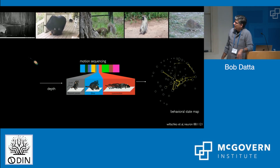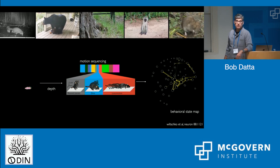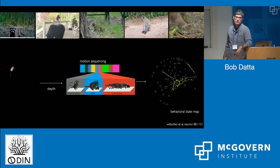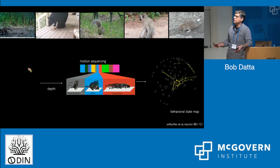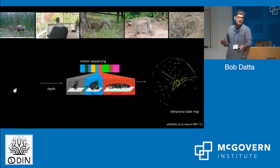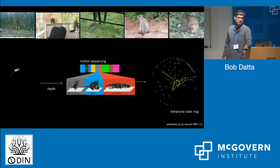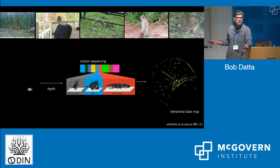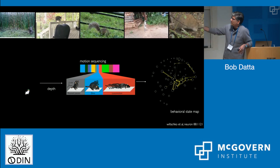We then submit these data to our motion sequencing or MoSeq algorithm. It's an unsupervised time series machine learning approach to decomposing behavior. It seeks to identify the optimal set of behavioral elements, or what we refer to as behavioral syllables, out of which behavior is created by the brain in any given experiment. In a typical open field experiment it'll discover 40 or 50 syllables. They're typically three, four, 500 millisecond long, stereotyped repeatedly used motifs of three-dimensional action, like a rear, a turn to the right, or a step to the left.